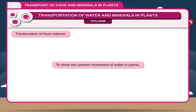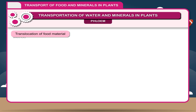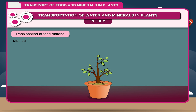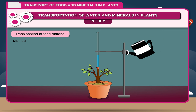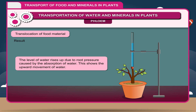Activity — To show the upward movement of water in plants. Method: Take a fresh potted plant of tomato and cut its shoot near the soil. Fix a glass tube and tighten the connection with a rubber band. Add water so the cut surface does not dry up, and add 2–3 drops of oil to prevent evaporation. Add water in the pot and observe the level of water rising up. Result: The level of water rises due to root pressure caused by the absorption of water, showing upward movement of water.